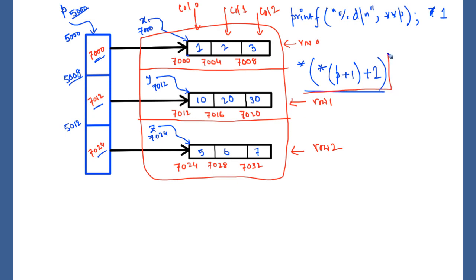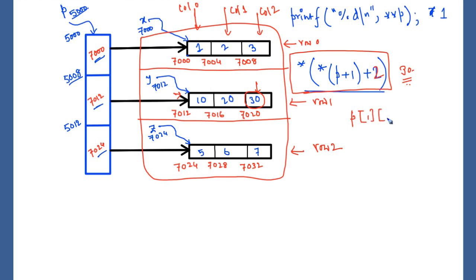The expression *(*(P+1)+2) accesses the second row and third column, which is 30 — we got 30 printed. If it were a traditional two-dimensional array and we wanted to print the content for second row and third column, we would write P[1][2] instead. These two expressions are equivalent. When we write double subscript notation to access a cell of a two-dimensional array, it ultimately gets converted to pointer notation.